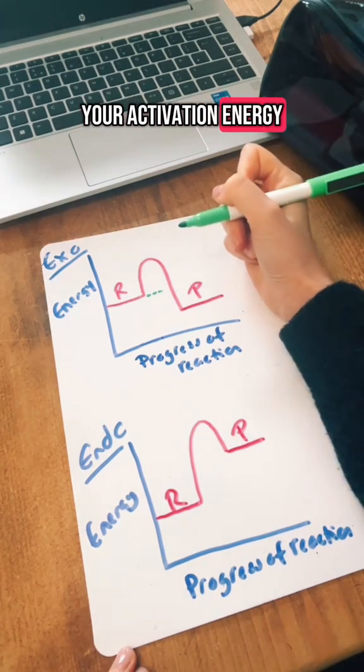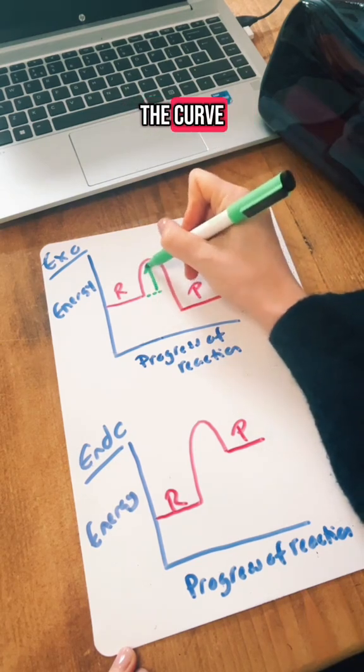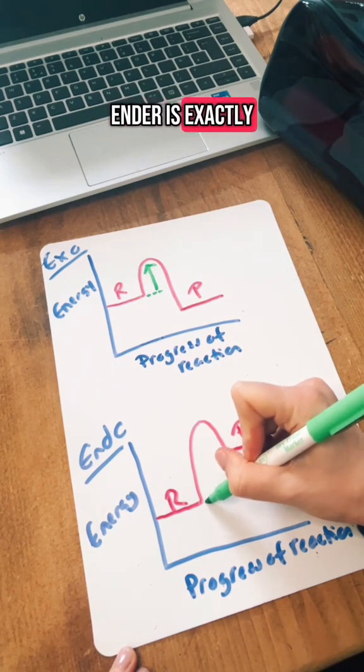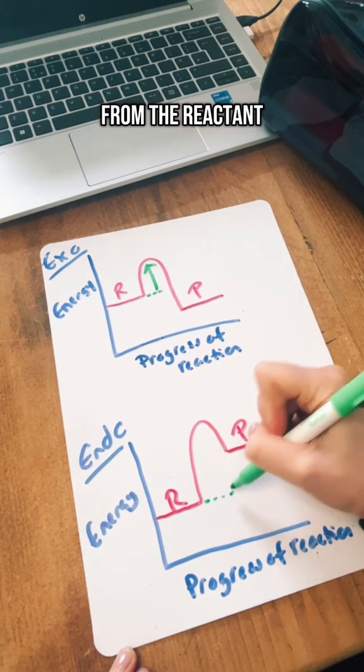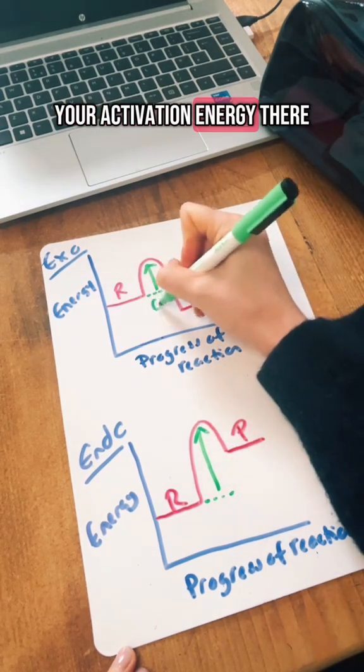Your activation energy is always from the reactant to the top of the curve like that. Don't get confused for endothermic—it's exactly the same, from the reactant to the top of the curve. So that is your activation energy there.